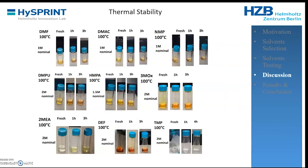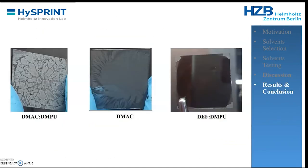Thermal stability was assessed by heating precursor solutions for three hours at 100°C and monitoring color change, which would indicate instability or decomposition of complexes. Most solvents were stable under these conditions. We also attempted film formation from these solvents — most did not form well-connected, thick perovskite films. Some formed transparent layers, until we identified the DEF-DMPU mixture, which produced very interesting layers that are consistent, well-connected, and thick enough to form a perovskite solar cell.